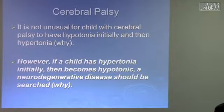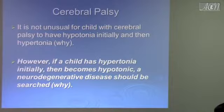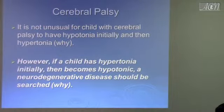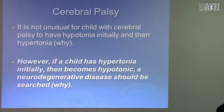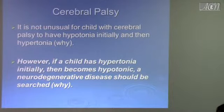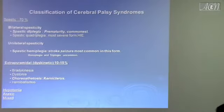It is not unusual for a child with cerebral palsy to have hypotonia initially and then hypertonia — we just said that. However, if a child has hypertonia initially and then becomes hypotonic, a neurodegenerative disease should be searched. Examples include metachromatic leukodystrophy, which can affect the central nervous system making them very stiff, then hit the peripheral nervous system making them hypotonic, and Krabbe disease as another example.